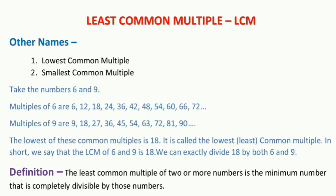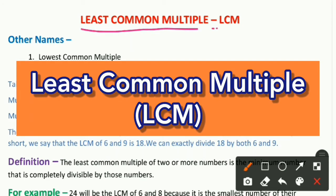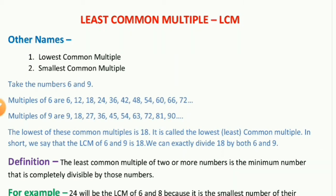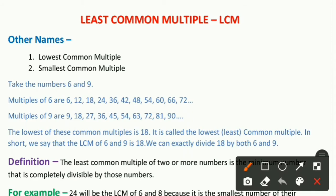Today's topic is Least Common Multiple, which is known as LCM. LCM is the short form of Least Common Multiple, and it has two other names: the first is Lowest Common Multiple and the second is Smallest Common Multiple. Now let's understand what LCM is, and I have taken one example for that.